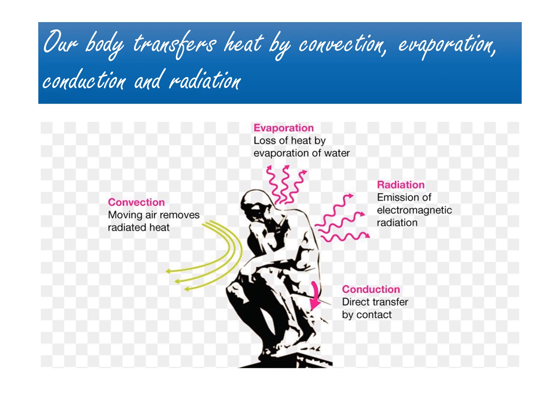Convection is the process by which we lose our body heat through the movement of air across the skin. Evaporation is the loss of heat by evaporating sweat from our skin, which is how we eliminate body heat. So when the fan is switched on, the fan makes it easier for the air to evaporate sweat from our skin, which makes us cool.